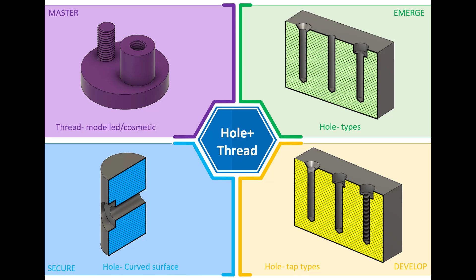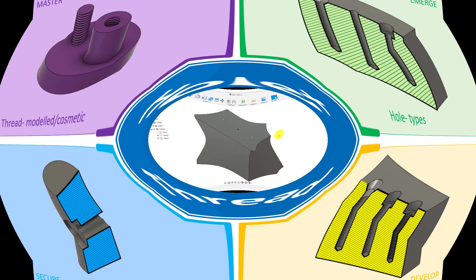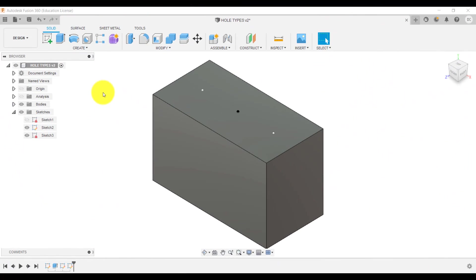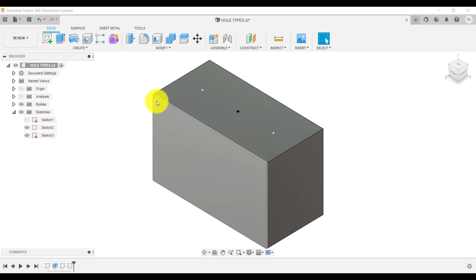Hi and welcome to this Fusion 360 tutorial. Today we're going to look at the hole and thread feature in Fusion 360. As you can see on screen, we have four activities or four challenges which will either introduce or develop your existing knowledge about these features. So let's get straight into it. What we've got here is a simple extrude in Fusion 360 and I've created on this top surface three points to locate the holes.